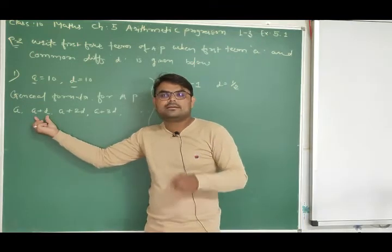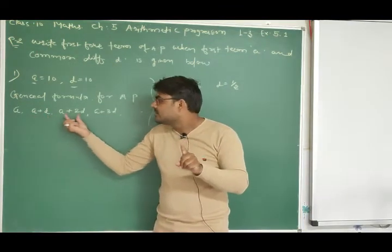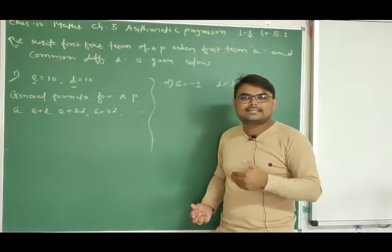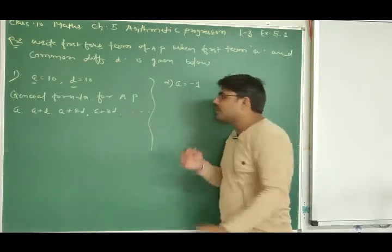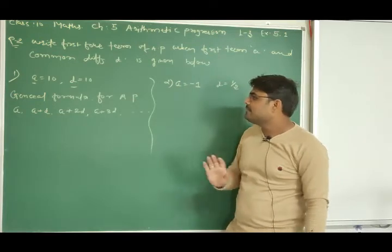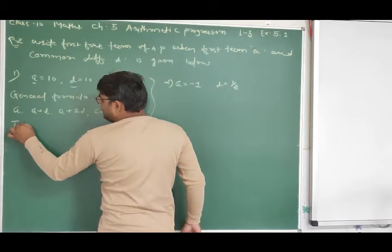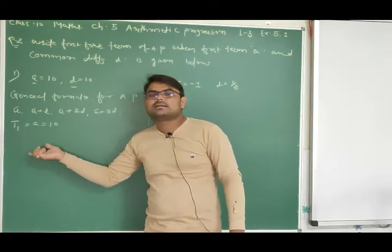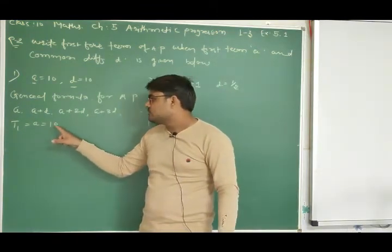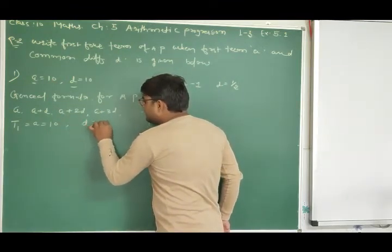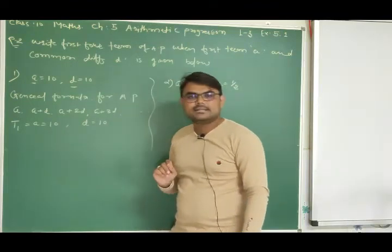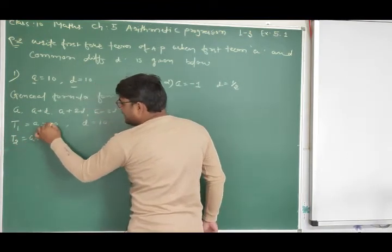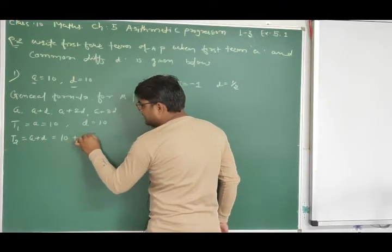For example, if the first term T1 = A = 10 and the common difference D = 10, then T2 = A + D = 10 + 10 = 20.